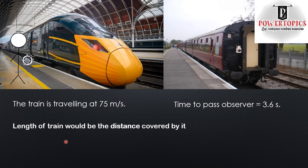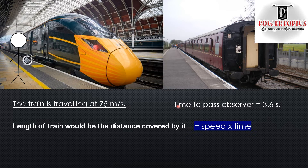Now the length of the train would be the distance covered by it. We've already got the speed and also the time. So to calculate the distance, it would be speed multiplied by time. Speed is 75 and time is 3.6, and you get 270 meters. So the train is 270 meters long.